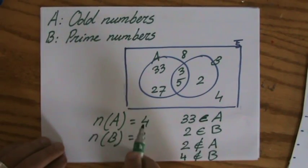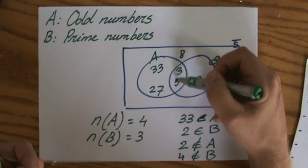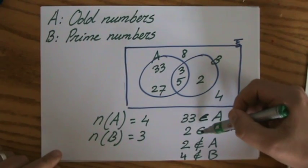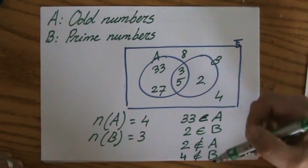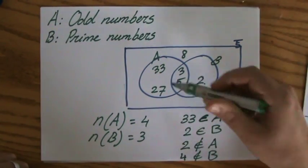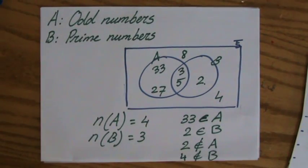So we have the number of elements. What is an element? The element is just a piece of information. So two is an element of B, and two is not an element of A. It's not inside the set of A.